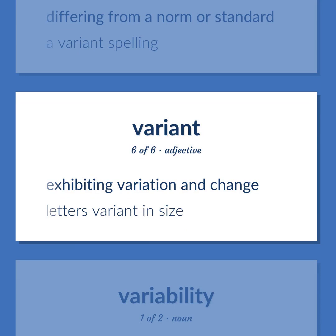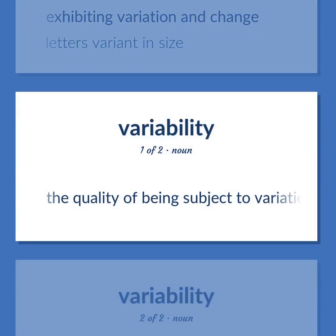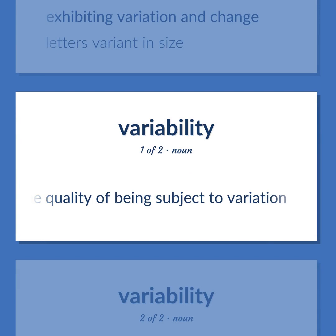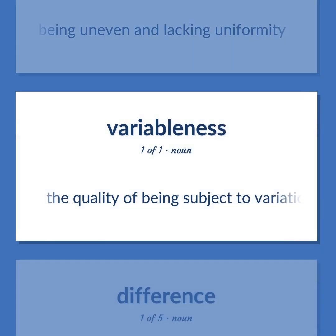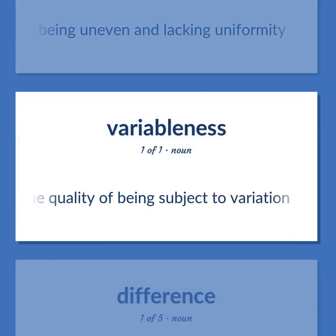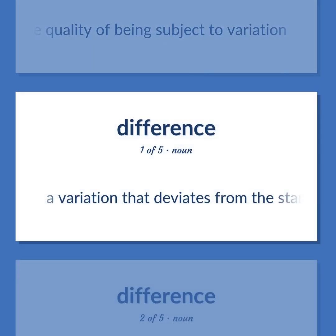Exhibiting variation and change — letters variant in size. The quality of being subject to variation. The quality of being uneven and lacking uniformity. The quality of being subject to variation. A variation that deviates from the standard or norm.